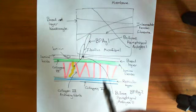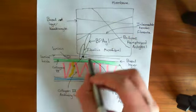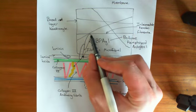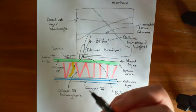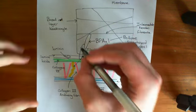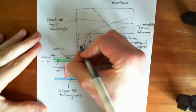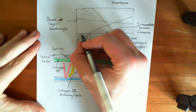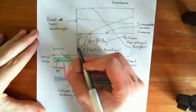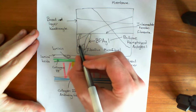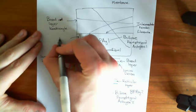That's part of the hemidesmosome. That's one of the connections between the intermediate keratin filaments and the basement membrane. But there's a second connection. In this connection, you have a molecule called plectin, which is intracellular. It has a rod-like shape, attaches to keratin, and then swells out on the end. That molecule is called plectin.